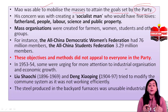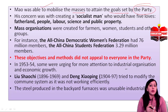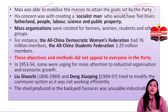For example, the All-China Democratic Women Federation was created with around 76 million members, and the All-China Students Federation was created with 3.29 million members.